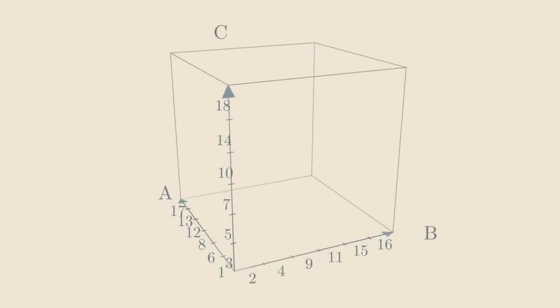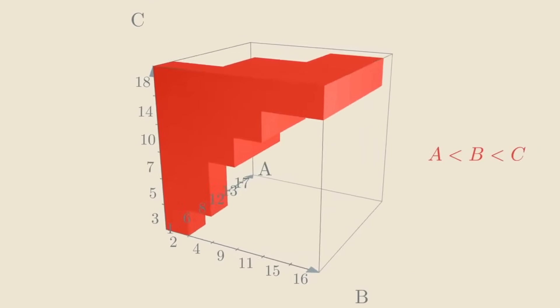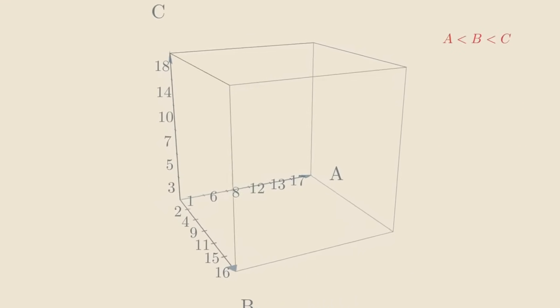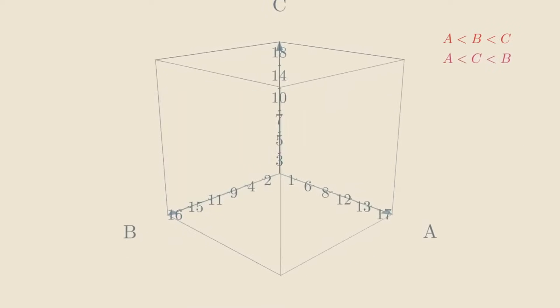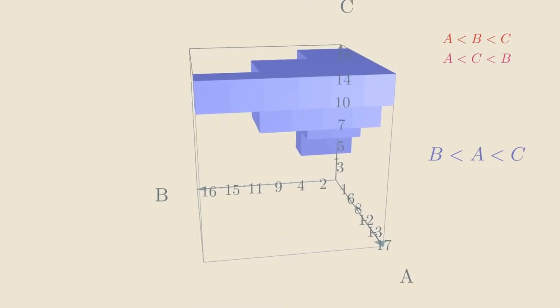So, the case of two players is simple. But the case of three players is already a lot more interesting. There are now 6 times 6 times 6 possible outcomes, and we can visualize them using a cube, like this. Just like we used a square in the two-player case.